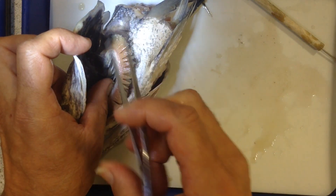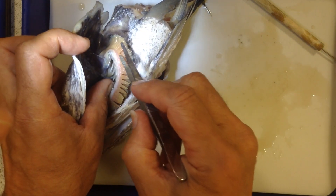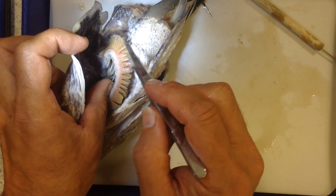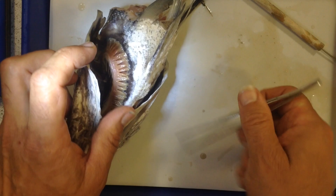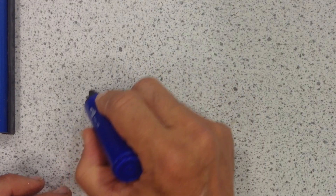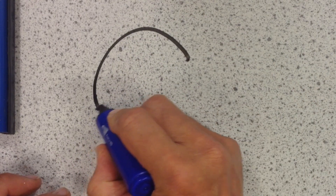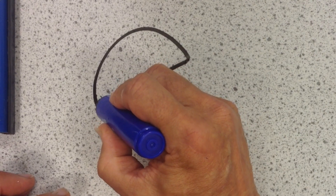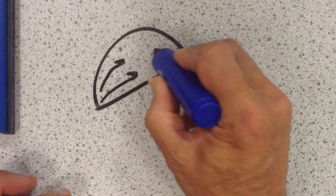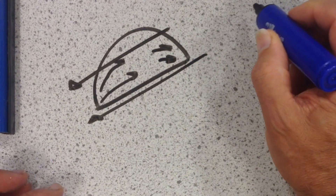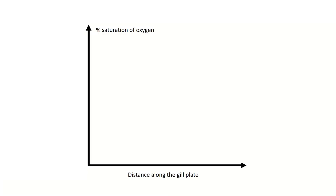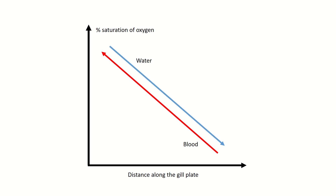You have an artery and a vein - the artery will supply blood into here and then the vein will take it back out again. Now here's the gill. The blood moves across from one side to the other, and the water moves in the opposite direction - it's called a counter current. As the blood goes across, it will constantly take oxygen out as the water goes in that direction.